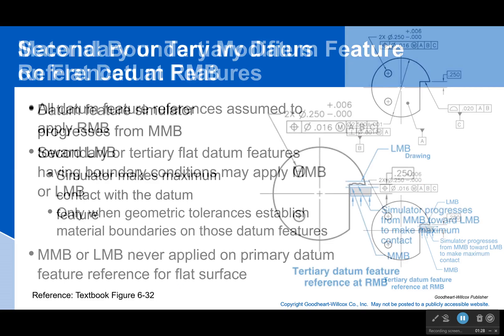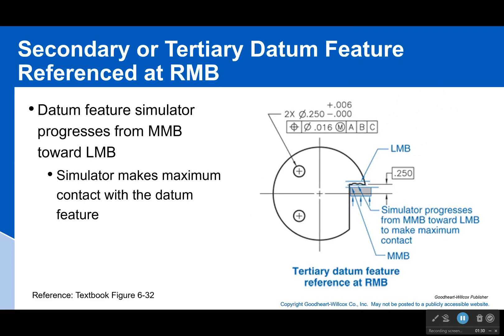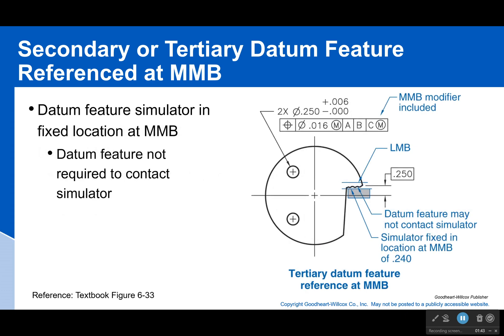As we're going to see, for the secondary or tertiary datum feature, it moves from max material boundary to the least material boundary — like it's doing right here — and it's going to do that until it connects. However, if we were to reference something at the max material boundary, we stop. Our datum feature simulator, even if it's not contacting the piece yet, does not move past the max material boundary.